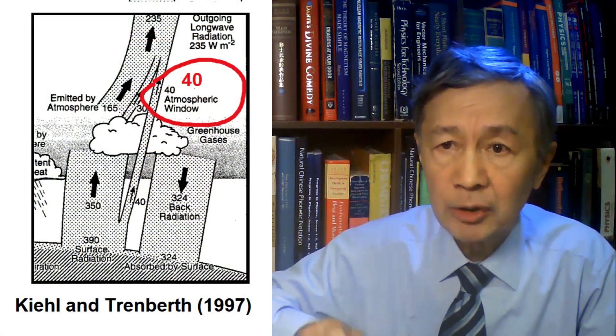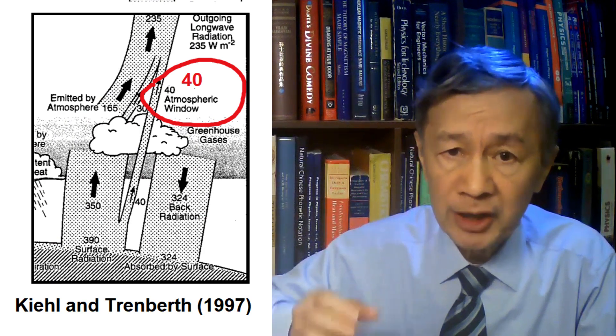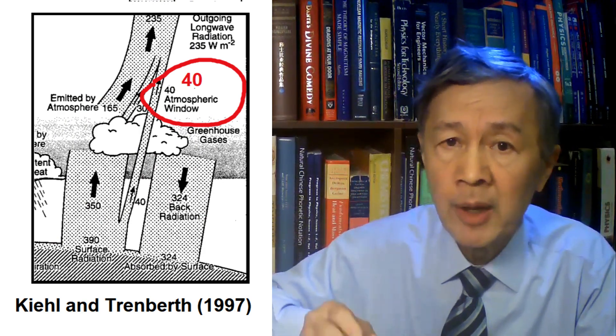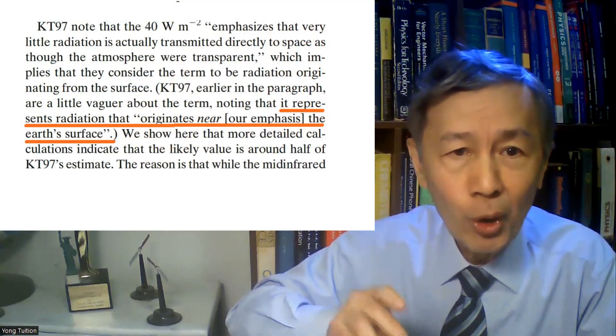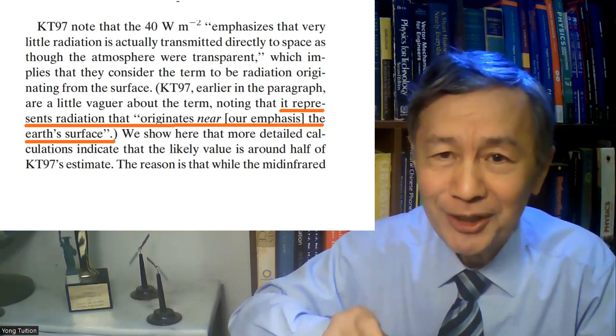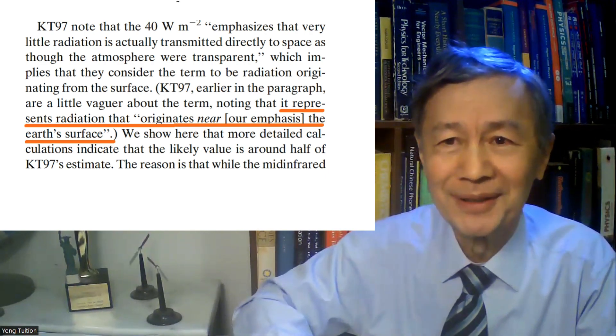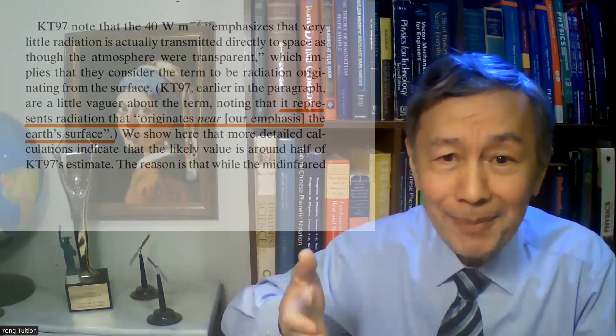In the paper by Kiel and Trembath, the transmitted surface emission is about 40 W/m², compared to the total OLR of 235 W/m². Although the authors made clear that their estimate is somewhat ad hoc rather than the product of detailed calculations. Interestingly, the authors also noted that the infrared radiation originates near the earth's surface — notice they used 'near' but not 'from' the surface. Clearly, they mean the air layer near the surface, nothing else. So it would appear they also thought there is no surface infrared radiation.